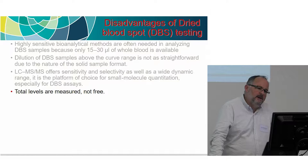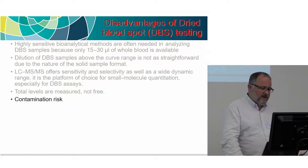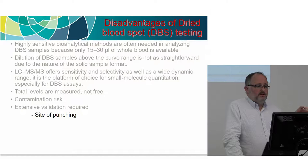You're going to get a total result. There's also contamination risk — people put cards together without separating them and you can get cross-contamination. You also need much more extensive validation because you've introduced another significant variable in your whole process: the card.